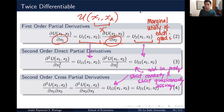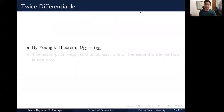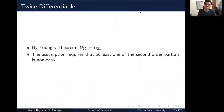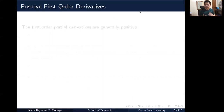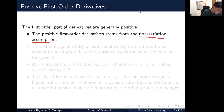By Young's theorem, the cross partial derivatives are equal: U12 equals U21. The assumption requires that at least one of the second order partials is non-zero. In general, for a utility function, the first order partial derivatives are positive, which stems from the non-satiation axiom. The non-satiation axiom states that a consumer prefers more to less. If we take the derivative of the utility function with respect to X1, this equals U1 of X1 and X2, and this is greater than zero.